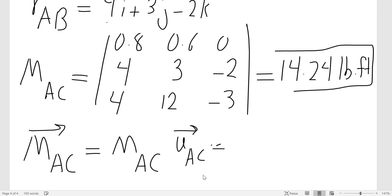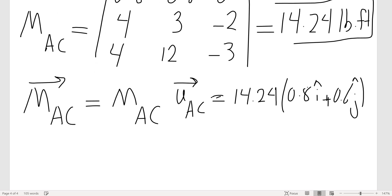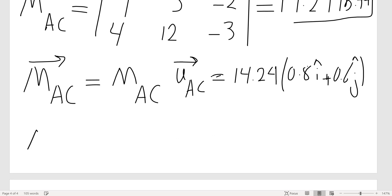Just multiply it by UAC, which is this first row here: 0.8i plus 0.6j. So it only has i and j components. So my vector MAC will be 11.52i plus 8.64j.